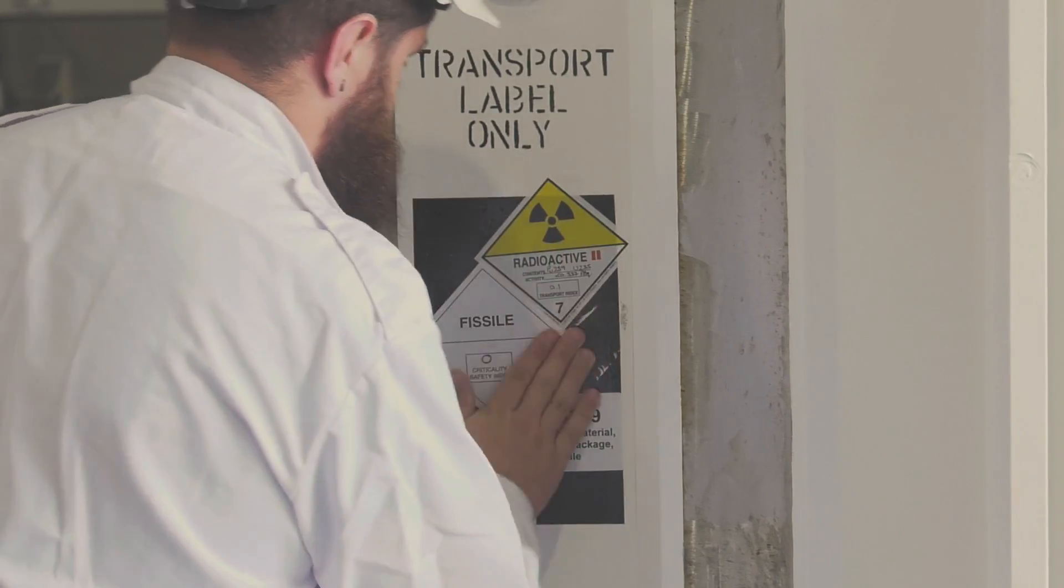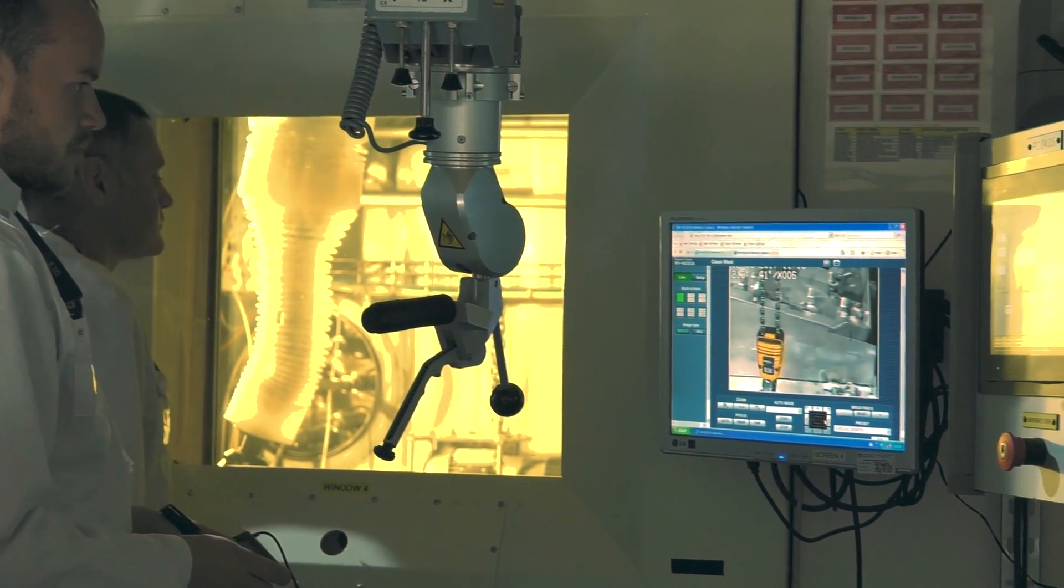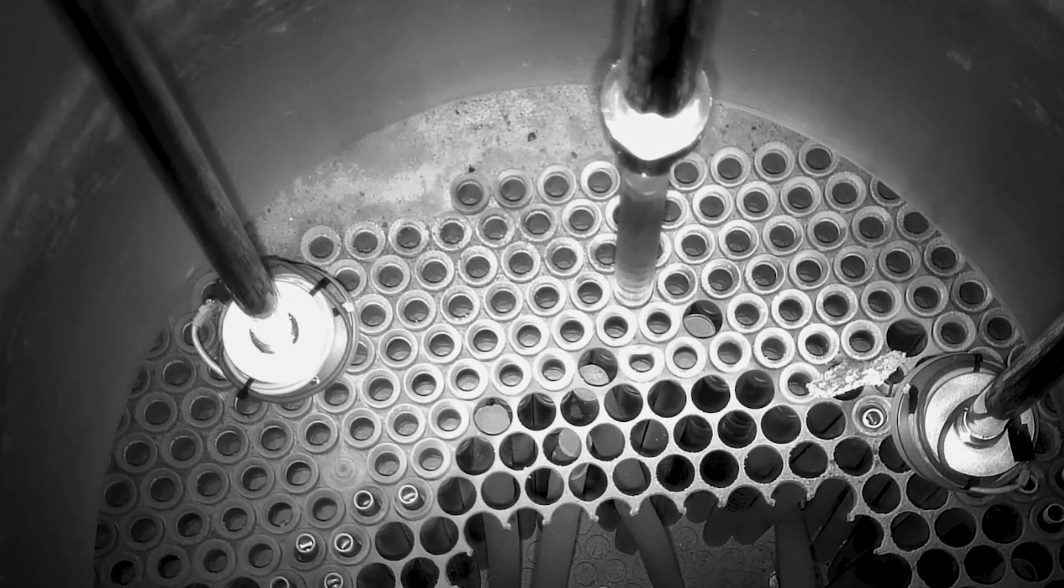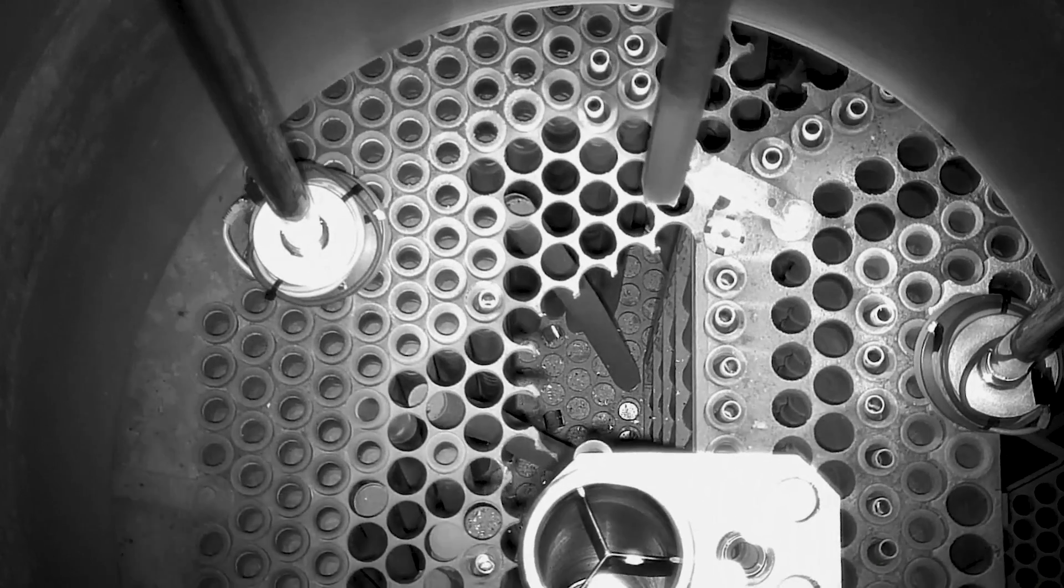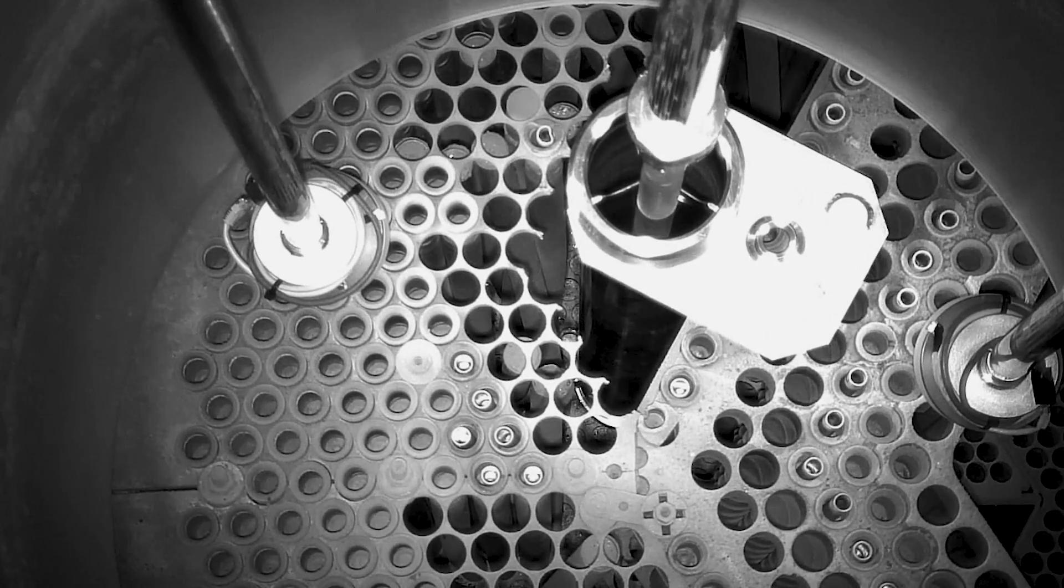Every element is different depending on where it's come from within the reactor. They've had different histories. Some of them have got different amounts of alkaline metal coolant on them and that creates a slightly different process that has to be tailored for each element depending on what we find.